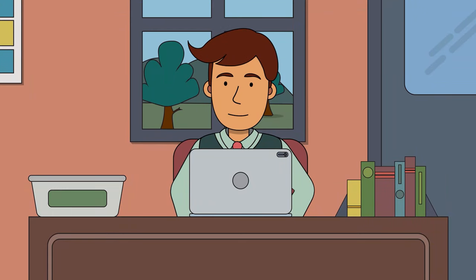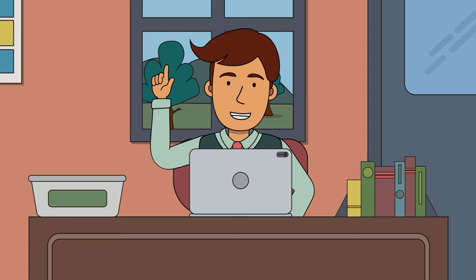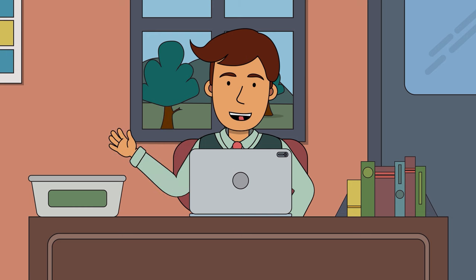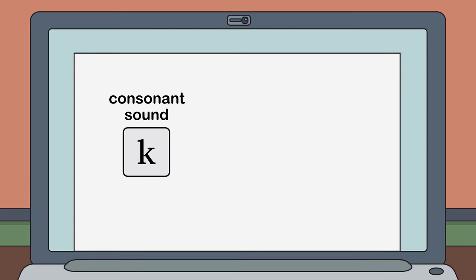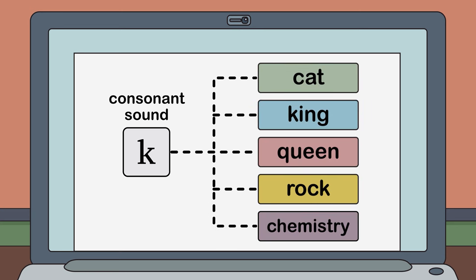Well, not really. This little spelling trick is just a bit of fun, but it only works because many of the sounds we use in English have lots of different ways of spelling them. As an example, the consonant sound K has at least five different spelling choices: C, K, Q, CK, and CH. That's a lot of choices for one sound.